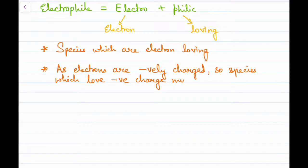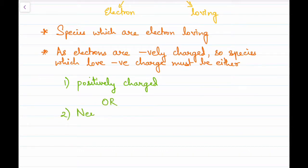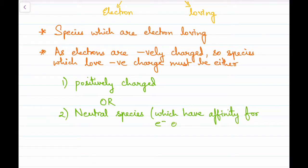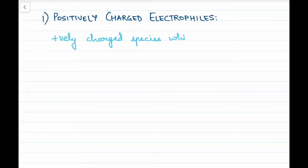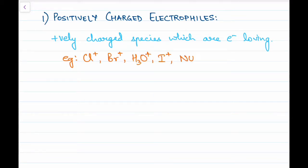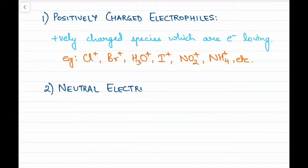Positive charge is quite obvious — because it has a positive charge it will attract electrons to itself. Those neutral species which have an affinity for electrons we'll study in detail. First: positively charged electrophiles. This is quite simple — they have a lack of electrons so they will attract electrons, and therefore they are electron-loving. For example: Cl⁺, Br⁺, I⁺, etc.